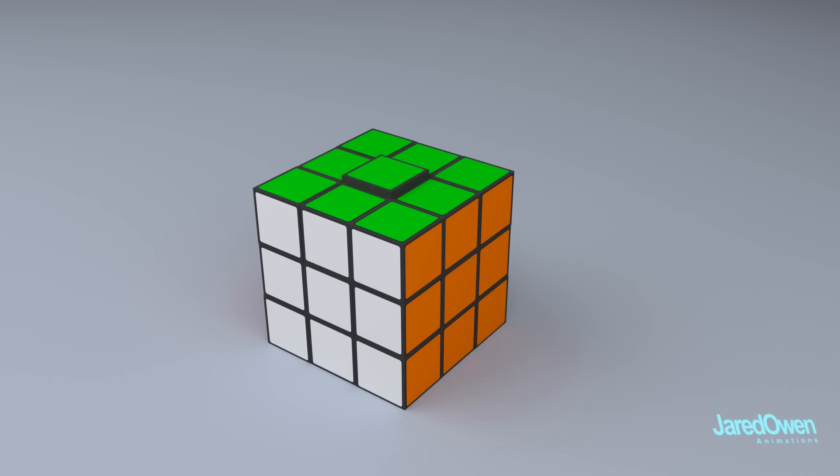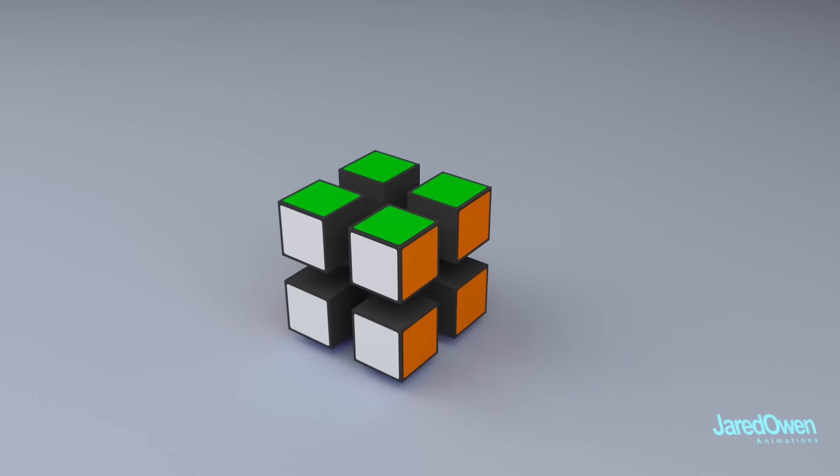The 3x3 Cube has centerpieces, edge pieces, and corner pieces. The 2x2 Cube only has corner pieces. There are eight of them.